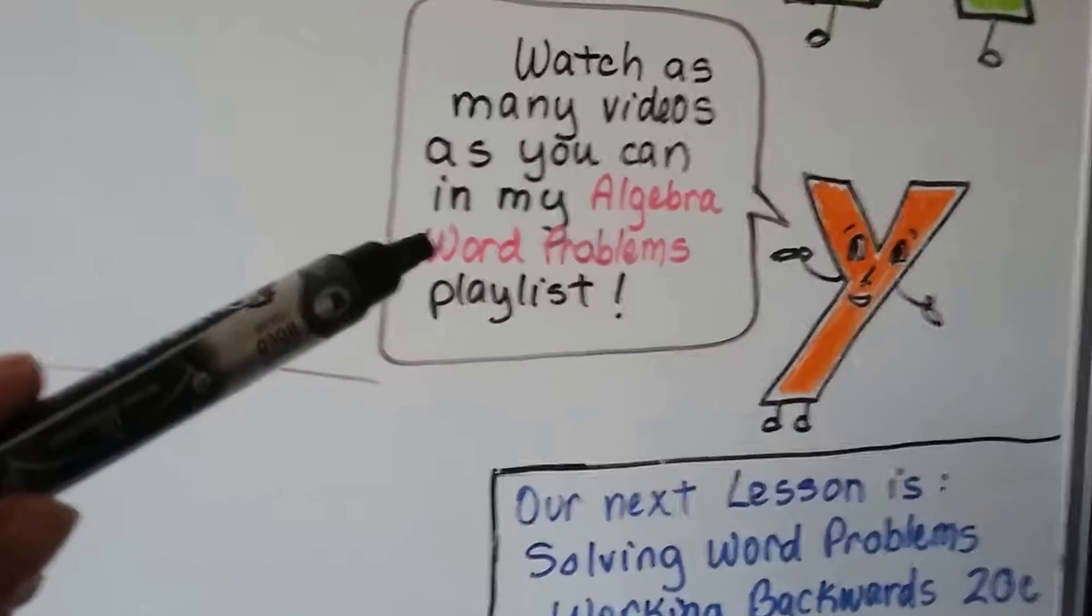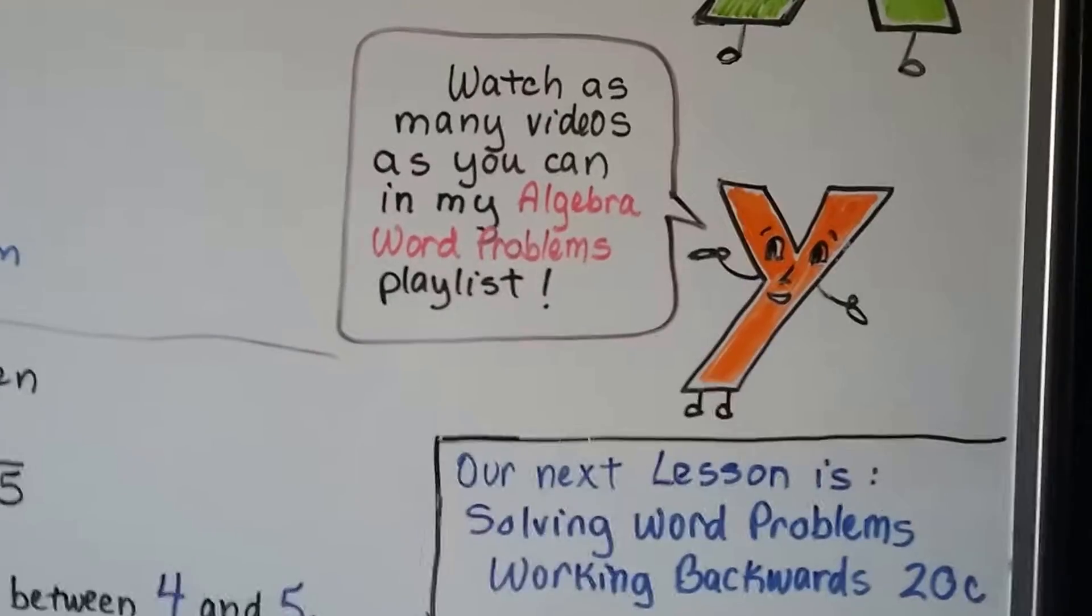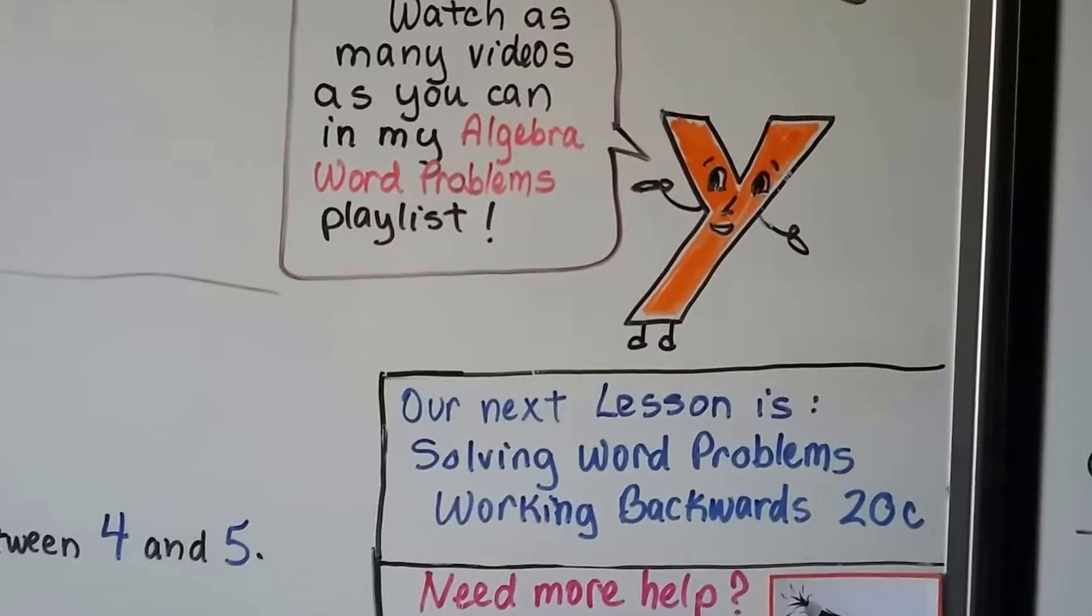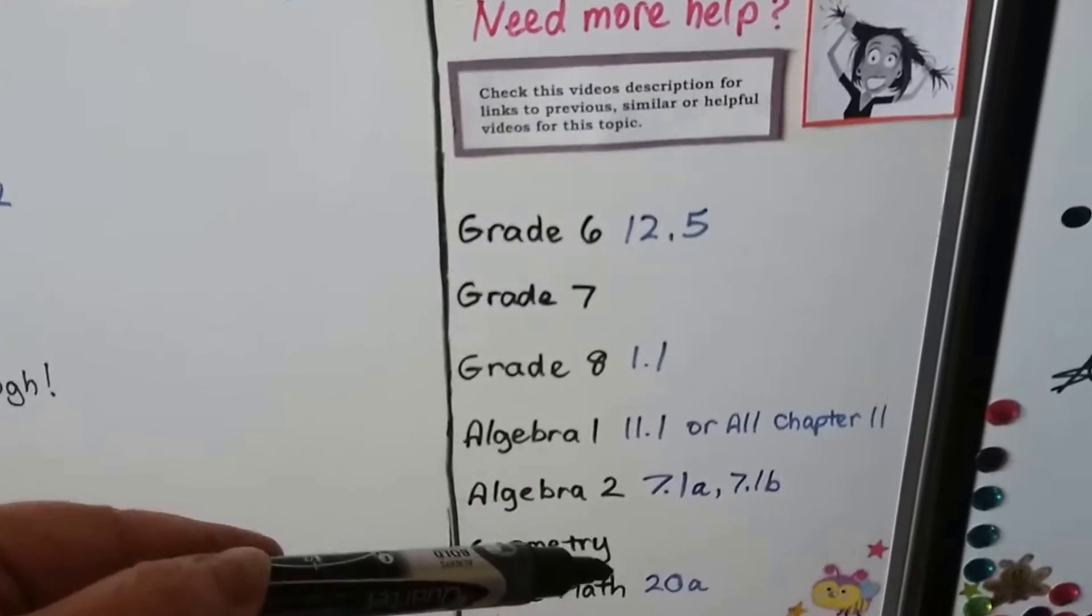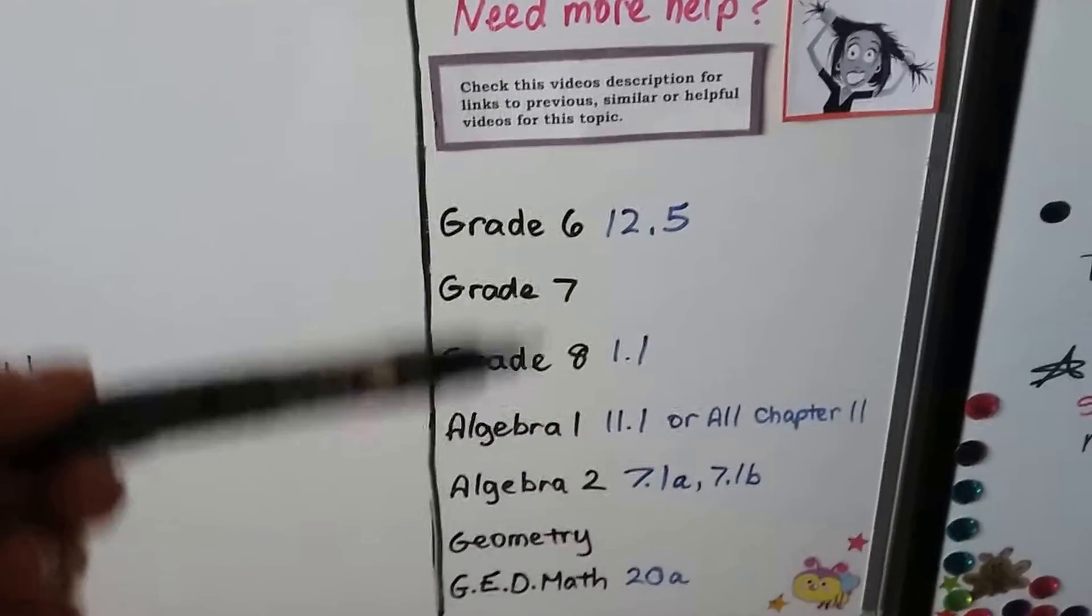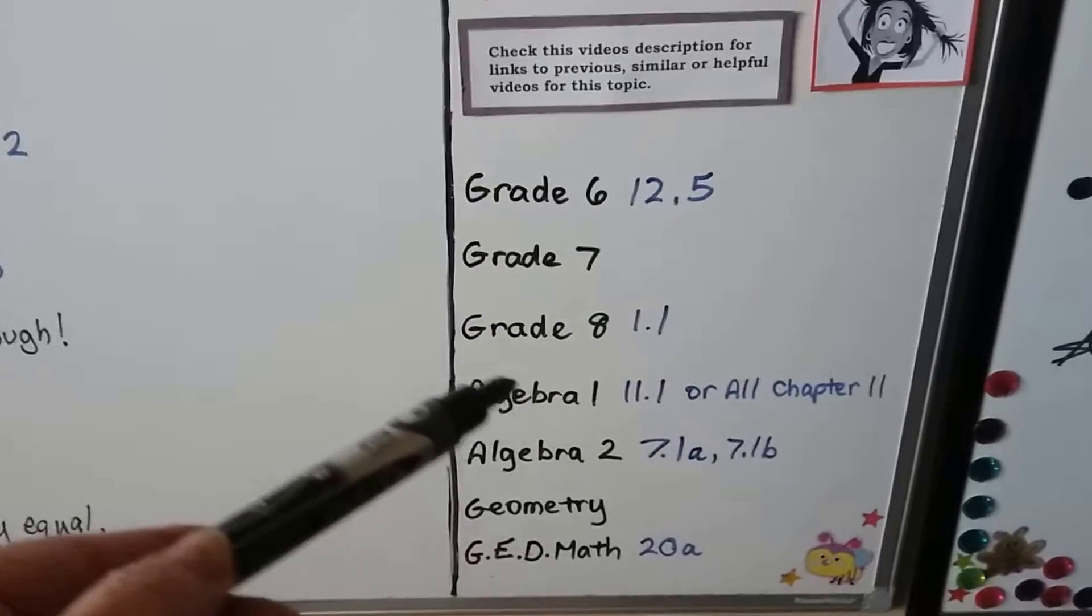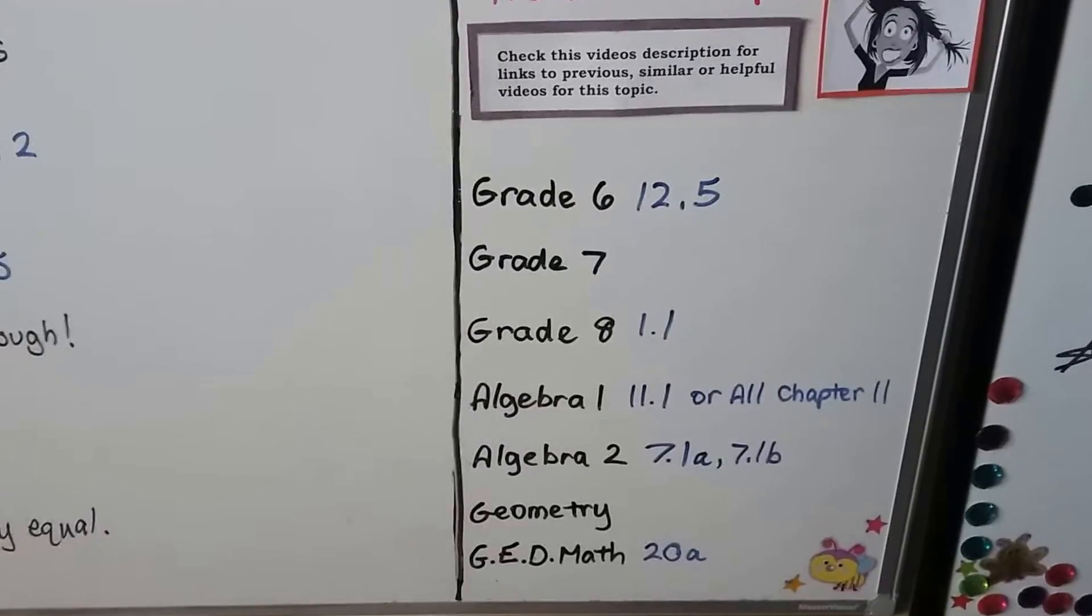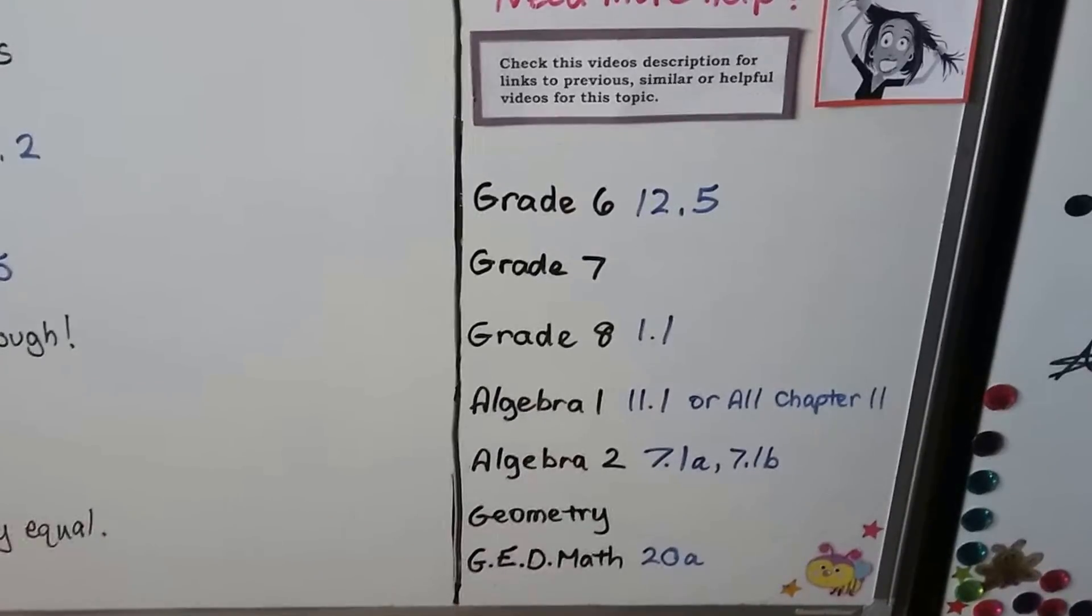So, watch my Algebra Word Problems playlist on the side as much as you can, because that's going to help you pass the GED test. There's a lot of word problems, and if you become very familiar with them, it's going to be secondhand to you. We're going to talk about solving word problems and working backwards to solve them in the next lesson, 20C, but all these videos are going to be linked in this description to help you. You can either pause the video right now and write these down so that you can watch them as soon as you're able, which I would do before you go to the next lesson, or you can open up a second browser window so that you can click on them, watch them, and then come back to this one to click on the next one. You can watch Algebra 1 video 11.1, or I would advise you to watch all of Chapter 11. If you really want to pass this test and do everything to help yourself pass this test, watch all of Chapter 11. I wanted you to watch all of Chapter 5 before, so you've got your work cut out for you.